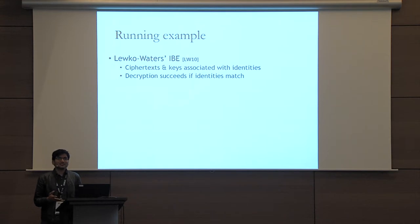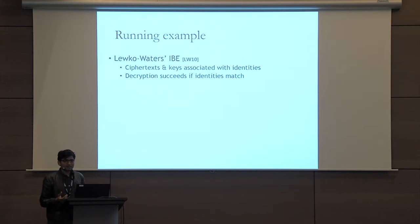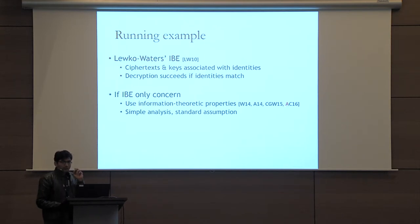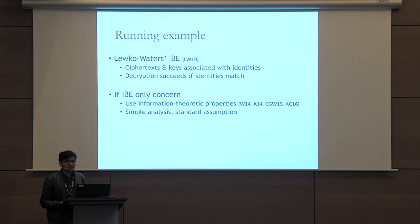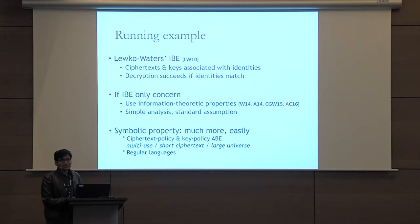In this scheme, ciphertexts and keys are associated with identities, and decryption works if the identities match. Note that if you are only concerned with identity-based encryption, then we can use one of the existing information-theoretic properties. We'll get a very simple analysis, and the security would follow from a standard assumption. But the symbolic property allows you to do much more — something which information-theoretic properties cannot do.